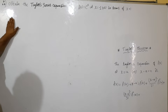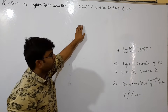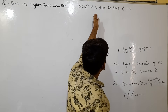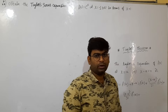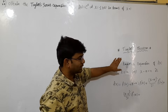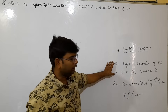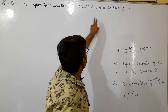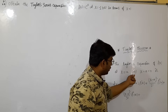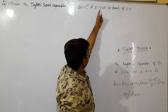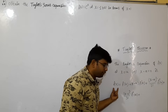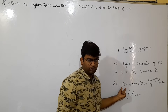Obtaining the Taylor series expansion of f(x) equals e to the power of x, at x equals minus 1, in terms of (x + 1). So f(x) is evaluated at x equals a, where x minus a equals 0, i.e. x plus 1 equals 0, giving a equals minus 1.